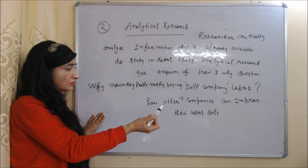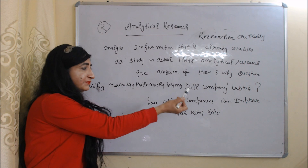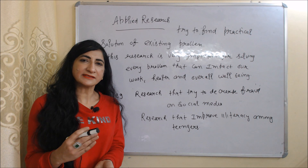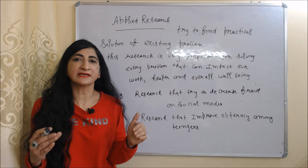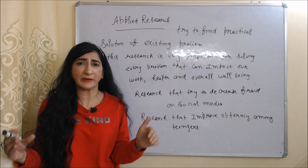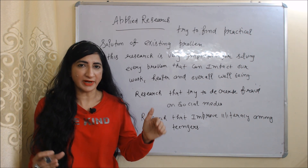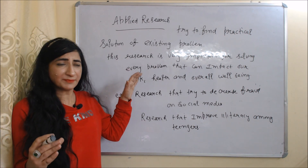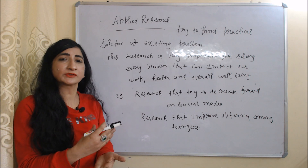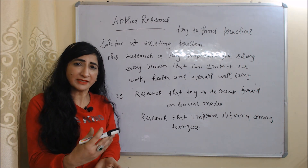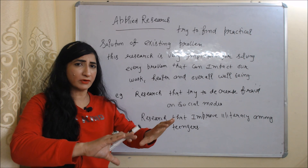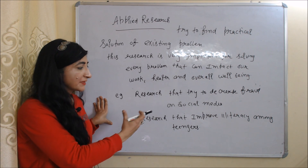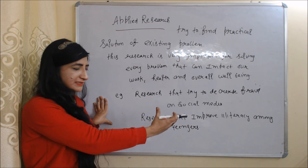For example, analytical research can give the answer of why people are mostly buying Dell company laptops, and also how other companies can improve their laptop sales. Next is applied research. Applied research tries to find out practical solutions to existing problems, and is very important for solving everyday problems that impact our health, work and overall well-being. For example, research that tries to decrease fraud on social media or improve literacy among teenagers are examples of applied research.